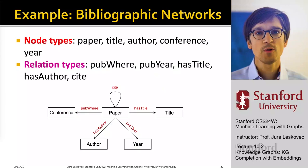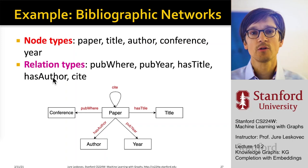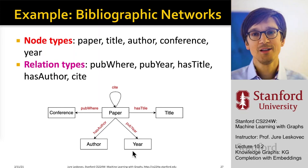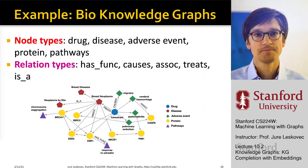For example, you could take a bibliographic network with different node types like papers, titles, authors, conferences, and years, and different relation types like where was the publication done, what year was it done, what title does it have, who is the author, and who cites it. The schema would show paper links to conference, papers cite each other, papers have titles, publication years, and authors.